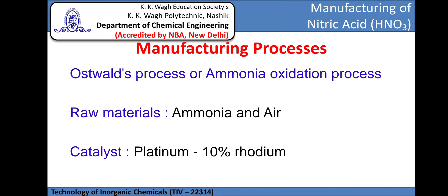In this session we are going to study the manufacturing of nitric acid through the Ostwald process, that is the ammonia oxidation process. The raw materials required in this process are ammonia and air, and the catalyst used is platinum with 10% rhodium.